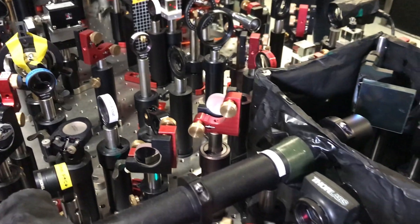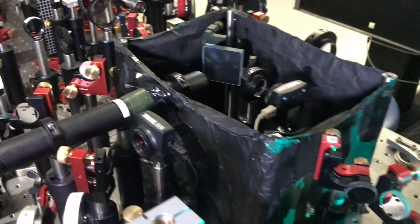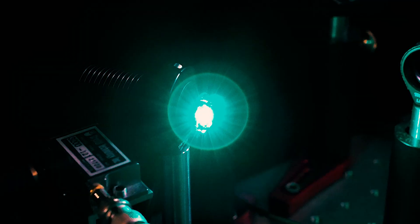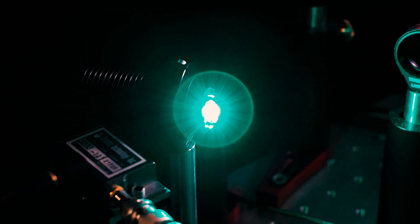First, photons are lost from the cavity, which we compensate by pumping the dye. Secondly, we couple the photons to a large reservoir. This leads to strong fluctuations back and forth between condensate and reservoir.